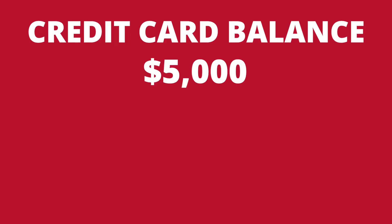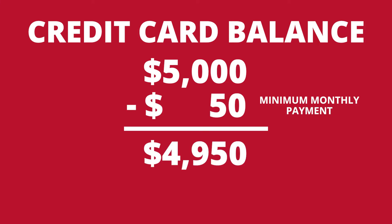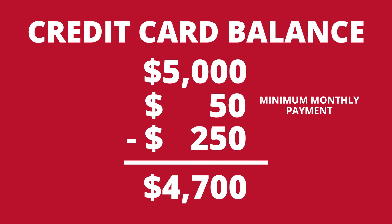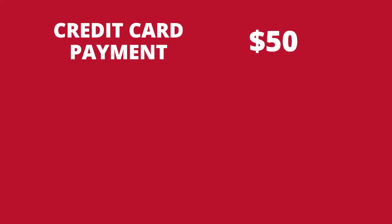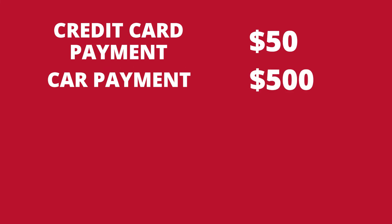For example, let's say your credit card balance is $5,000 and your minimum monthly payment is $50, but you pay an extra $250 a month to pay down the balance. When they calculate your DTI, they're using the $50 a month. Let's say you have a car payment of $500 a month — that doesn't include maintenance or fuel costs, as those are not included in your monthly debt. To keep things simple, we're going to use just two items: your minimum monthly credit card payment of $50 and your car payment of $500 a month.